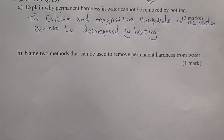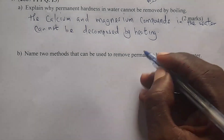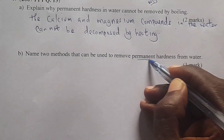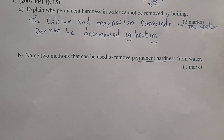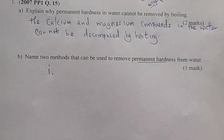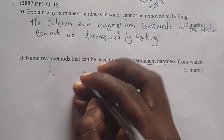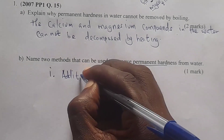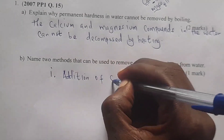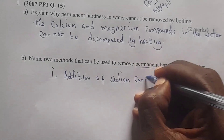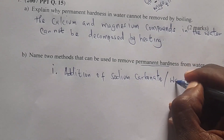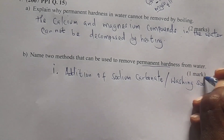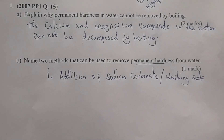Next, we are told: name two methods that can be used to remove permanent hardness from water. Methods of removing hardness in water were six — three of them remove only temporary hardness, and three of them remove permanent hardness. The ones that remove permanent hardness include: addition of sodium carbonate solution, also called washing soda or soda ash.